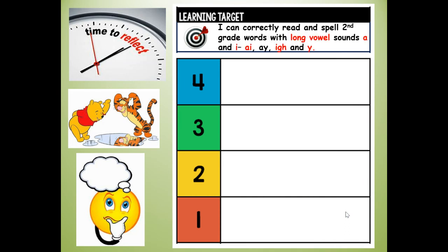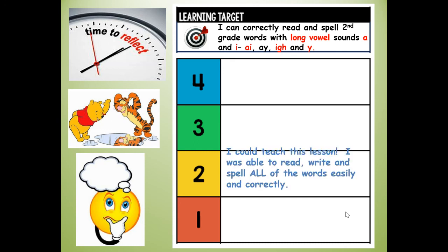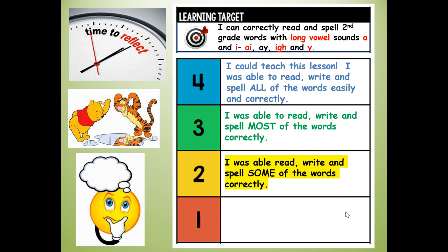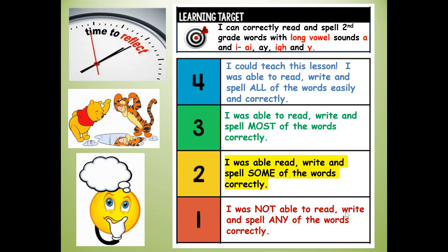Let's reflect on our learning. Our learning target was: I can correctly read and spell second grade words with the long vowel sounds A and I — A-I, A-Y, I-G-H, and Y. How do you think you did? Give yourself a grade. Four — I could teach this lesson. Three — I was able to read, write, and spell most of the words correctly. Two — I was able to read, write, and spell some of the words correctly. One — I was not able to read, write, and spell any of the words correctly. My challenge to you is to write all of your spelling words three more times each on your paper. Thank you for reviewing the spelling words with me. Have a great day!